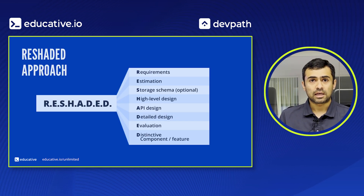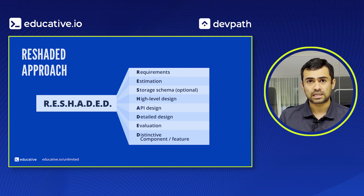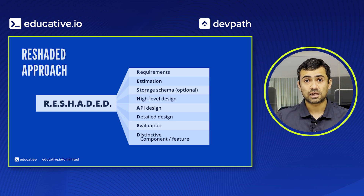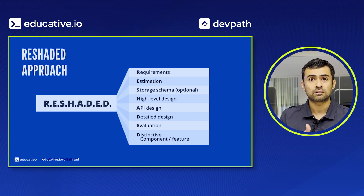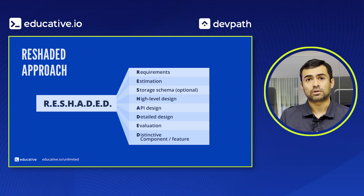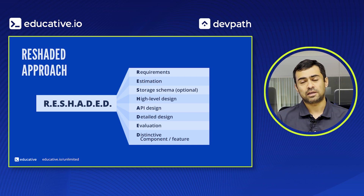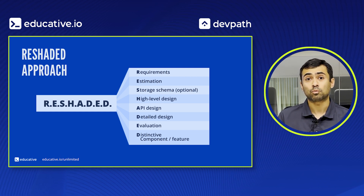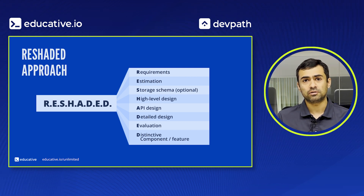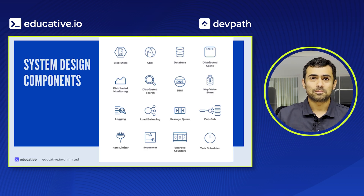Each problem in our courses is structured around this framework. We start with requirements, give estimates, come up with a good storage schema, produce a high-level design, define the APIs and their parameters, evaluate those APIs and the high-level design against the identified requirements, and then address the distinctive components specific to the application. RESHADED allows you to give a comprehensive answer and ensures you're not missing any key components during the interview. There's a danger you could rabbit-hole in one area, spend all your time there, and miss out on other things you should have mentioned for a more comprehensive solution.